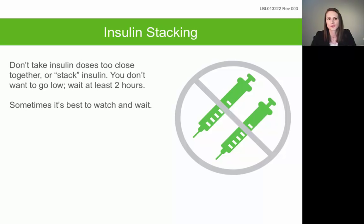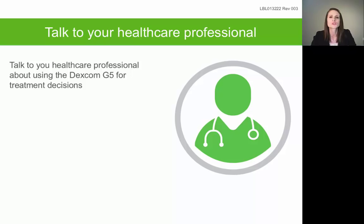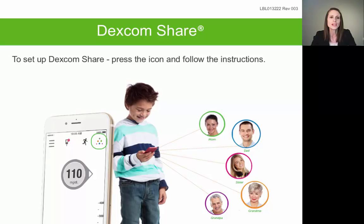Because your Dexcom measures glucose continuously, you may become more aware of when your glucose is high, which can sometimes lead to over-correcting by taking two doses of rapid-acting insulin in close succession. This is called insulin stacking and it can lead to severe hypoglycemia. Check with your healthcare provider to understand how long your rapid-acting insulin stays active and how far apart you should space your doses. When determining how to make treatment decisions using your Dexcom, speak to your healthcare provider — some people consider taking a little more or less insulin depending on the trend arrow displayed, but confirm with your provider how much to adjust.